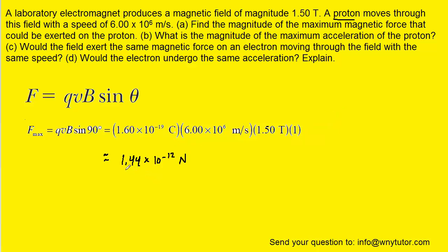And when we do so, we get a value of 1.44 times 10 to the minus 12 newtons. So that would be the maximum magnetic force exerted on the proton.